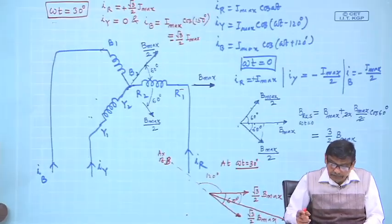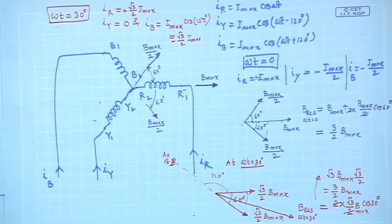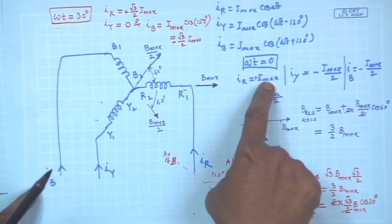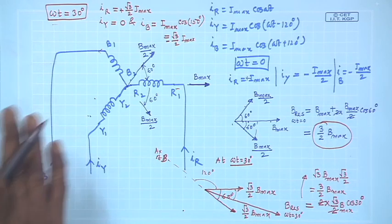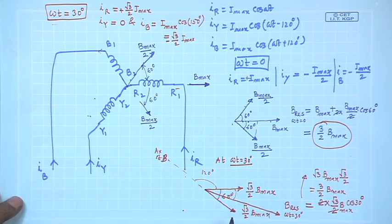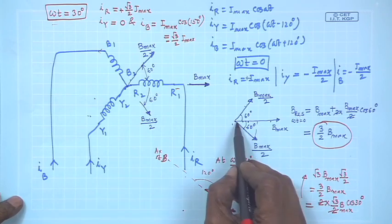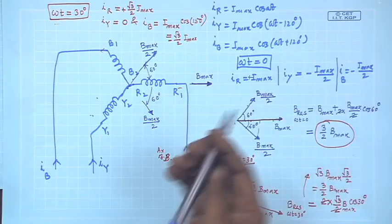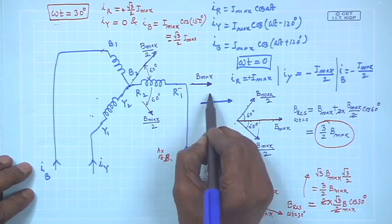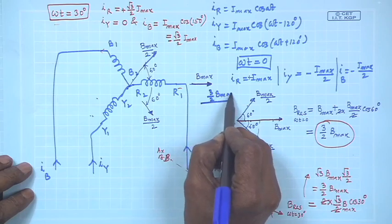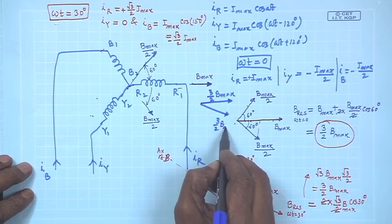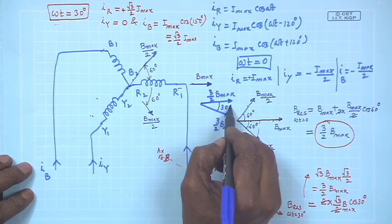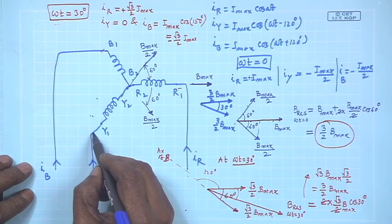What is the observation? The observation is: these coils are carrying balanced 3-phase current. At omega t equal to 0, I noted the resultant field was horizontal and its strength was 3 by 2 B max. As time passes, omega t becomes 30 degrees, and the resultant field moves from its original position.